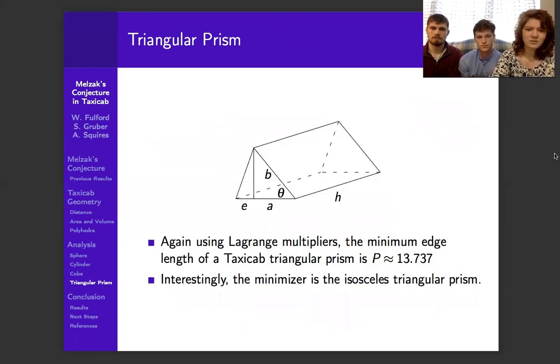So there are sometimes some other triangular prisms that are larger than the cube, and they do exist in taxicab space. So let's look at those. We use the Lagrange multipliers again to minimize the triangular prism, and we find that the minimum length is going to be around 13.